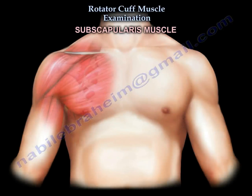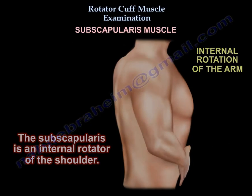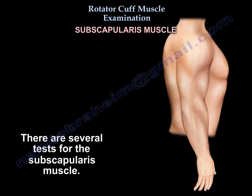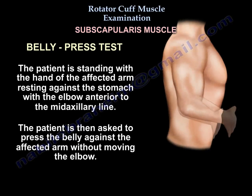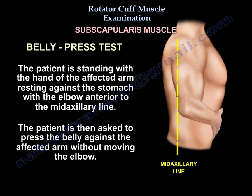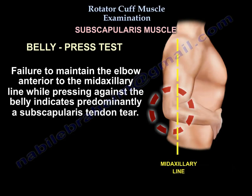The subscapularis is an internal rotator of the shoulder. There are several tests for the subscapularis. The belly press test: the patient is standing with the hand of the affected arm resting against the stomach with the elbow anterior to the mid-axial line. The patient is then asked to press the belly against the affected arm without moving the elbow. Failure to maintain the elbow anterior to the mid-axial line while pressing against the belly indicates a predominantly subscapularis tendon tear.